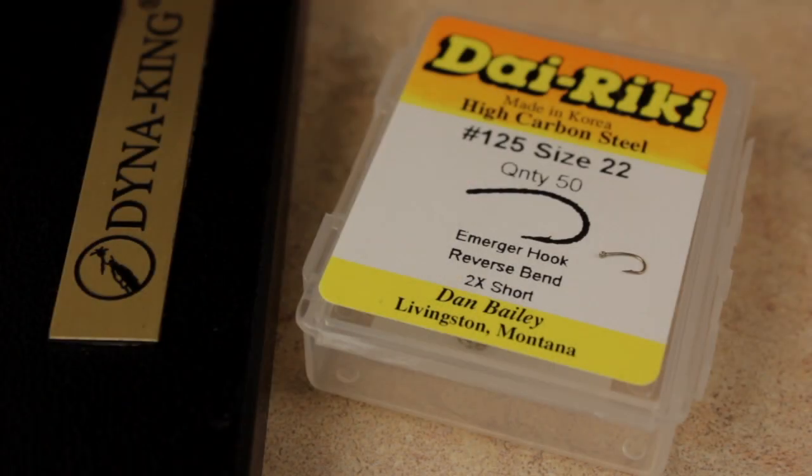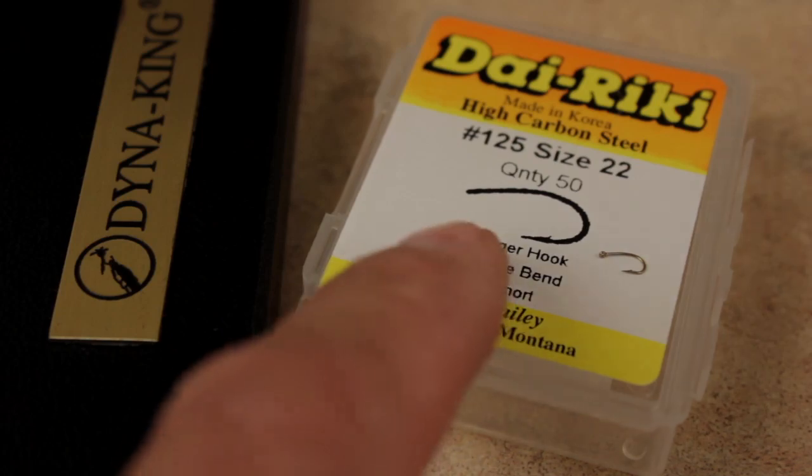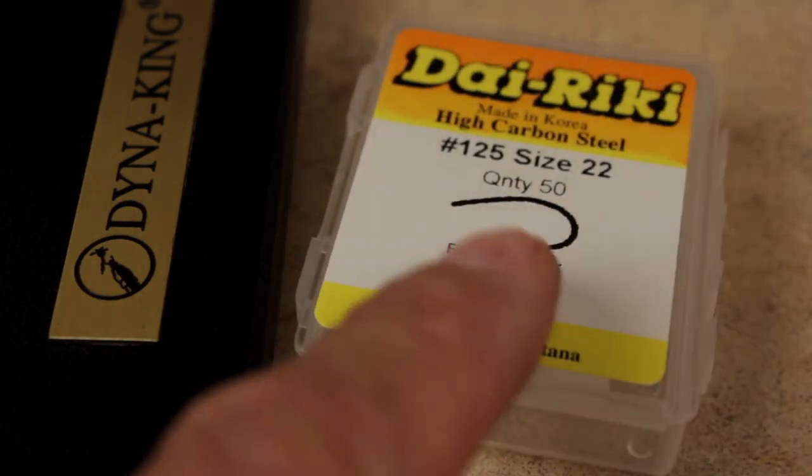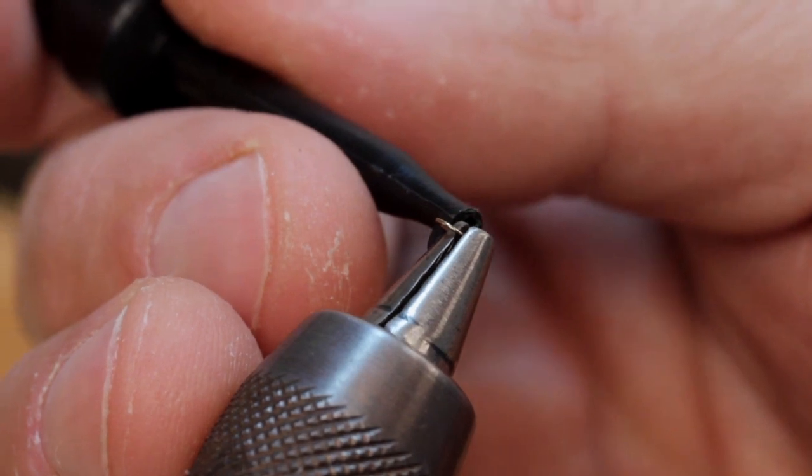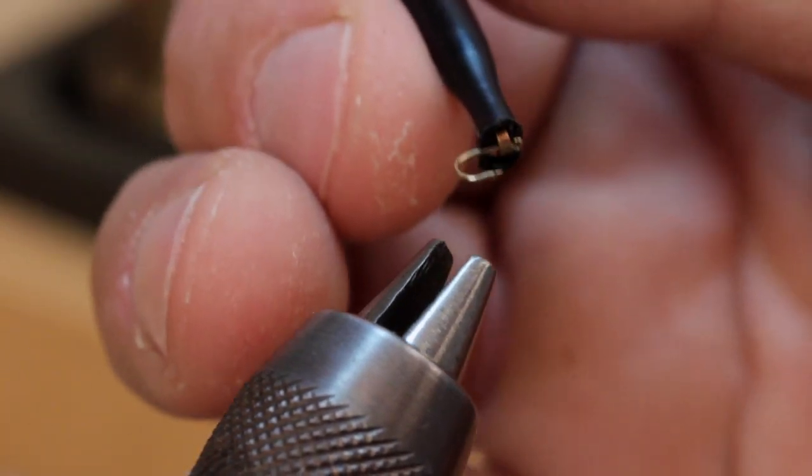For a hook, I like a Dairiki number 125, and here I'm using a size 22. Start by mashing the hook barb. This not only makes it easier on the fish, but also helps when you're threading the bead onto the hook.